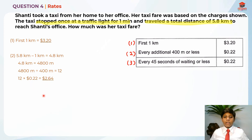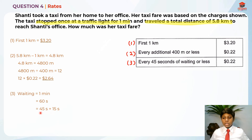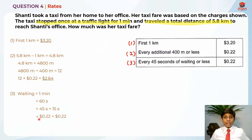For part three, the waiting time is one minute, which I convert to 60 seconds. Every 45 seconds or less is 22 cents. Splitting 60 seconds: the first 45 seconds is 22 cents, and the remaining 15 seconds (which is also 45 seconds or less) is another 22 cents. So 22 cents + 22 cents = 44 cents.